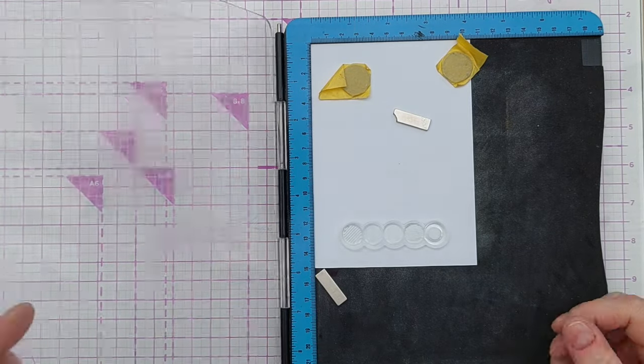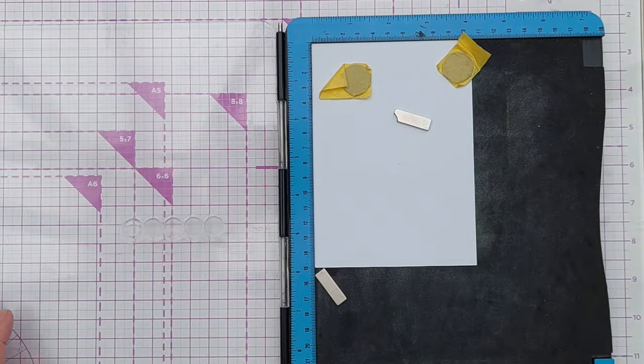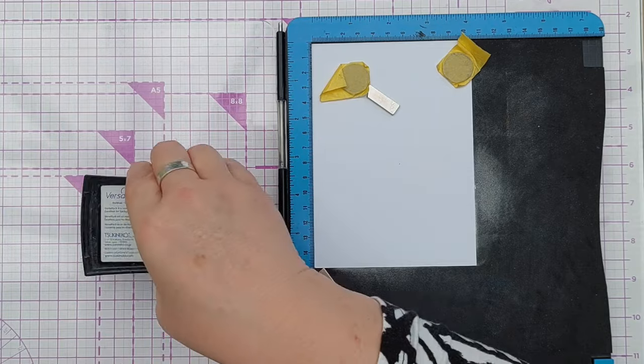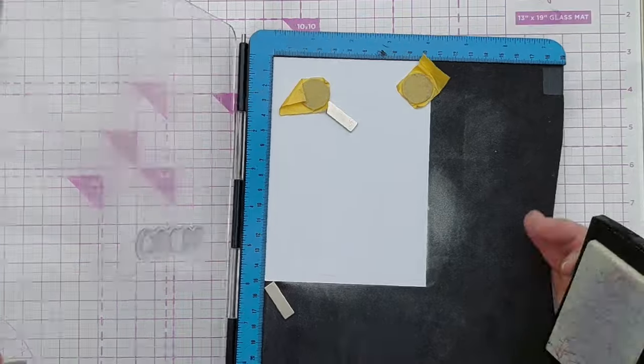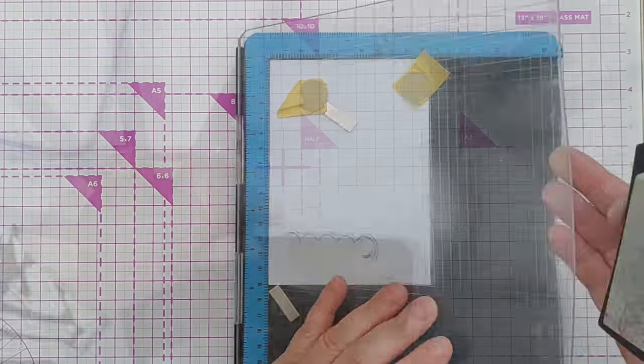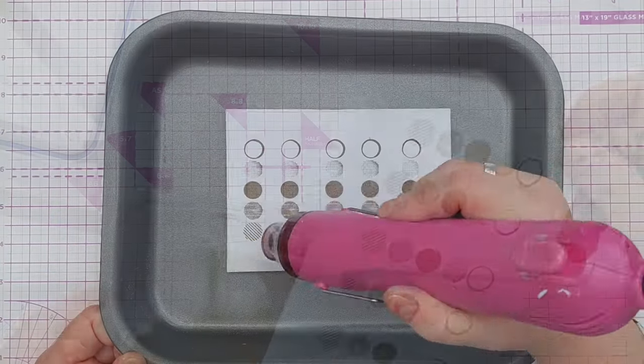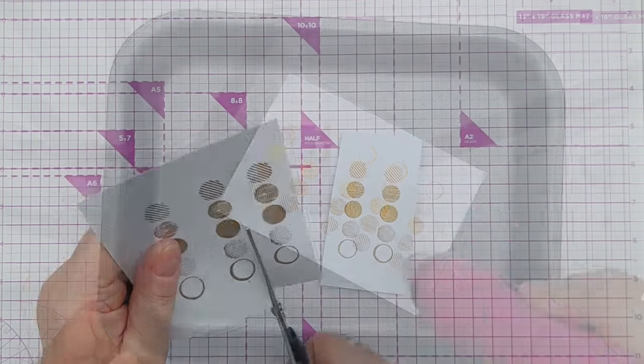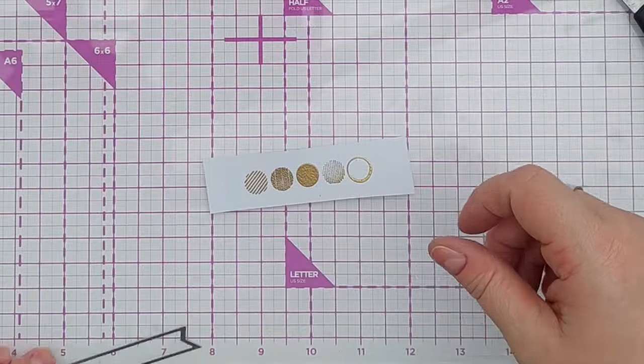Next I'm going to prepare a landing spot for my sentiment. And I've got this strip of circles and I'm going to heat emboss those on this smooth white cardstock. And I might do several, even though in my mind at the moment I'm thinking I only want one. I might do several just so I've got some spare.